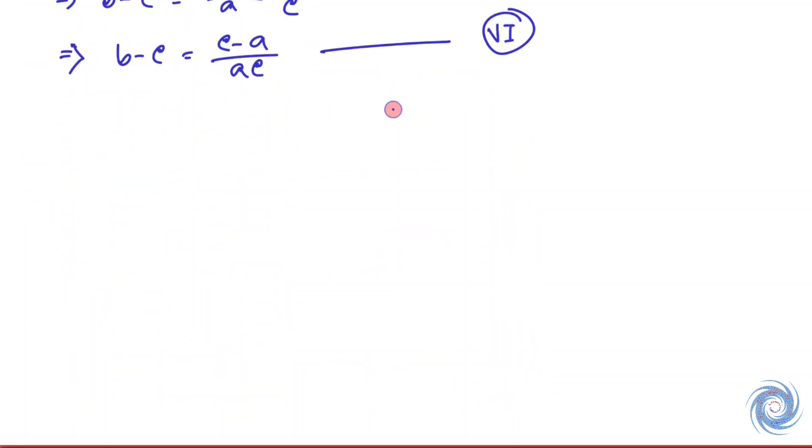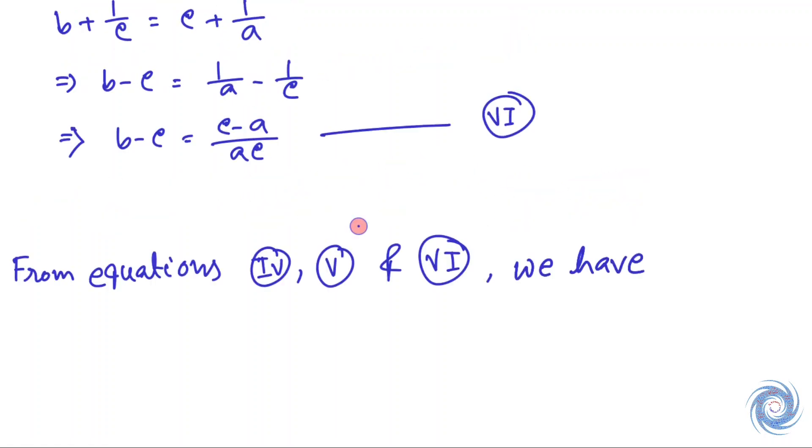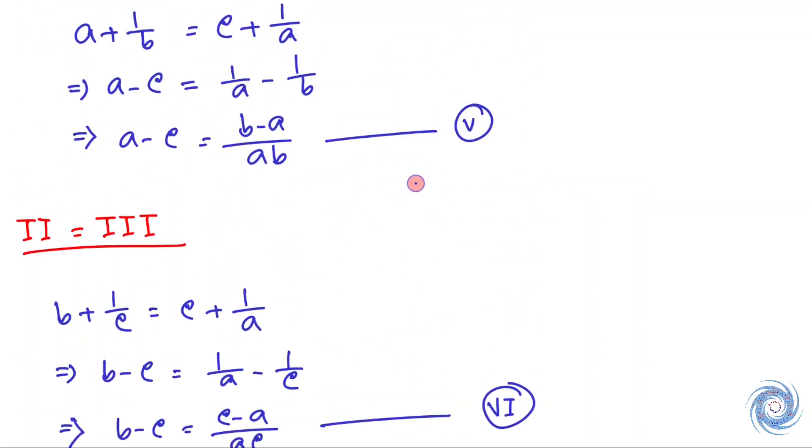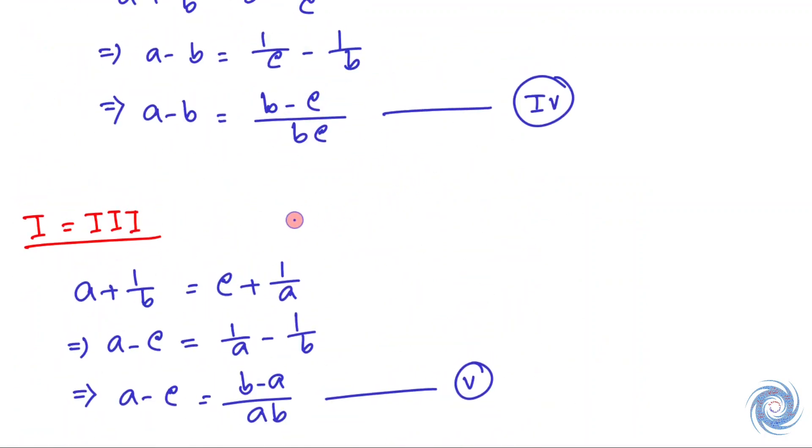Now from Equations IV, V, and VI, let us multiply the left-hand side of Equations IV, V, and VI, and then the right-hand side.